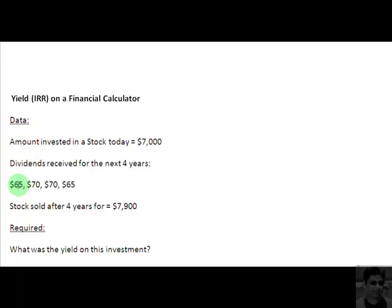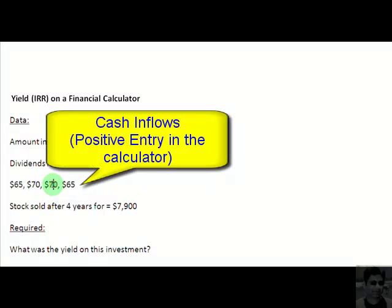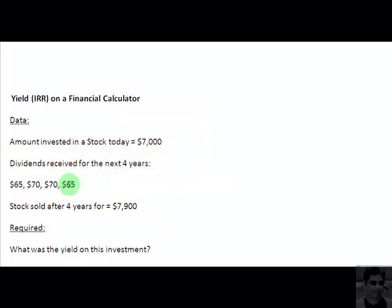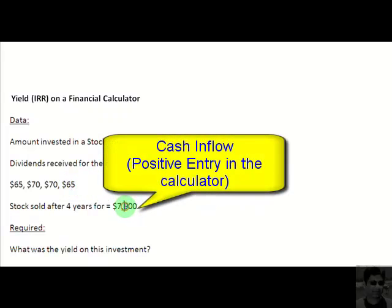$65 at the end of the first year, $70 at the end of the second year, $70 again at the end of the third year, and $65 at the end of the fourth year, at which point we are also going to sell our stock for $7,900.